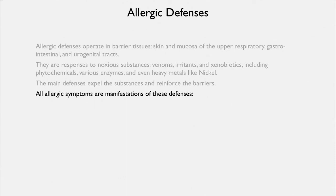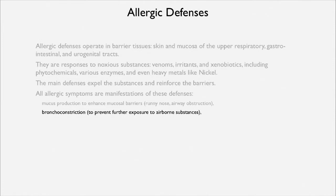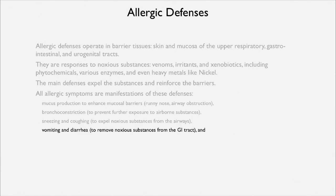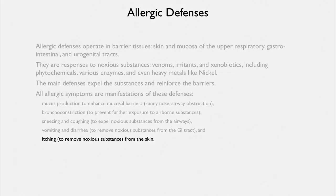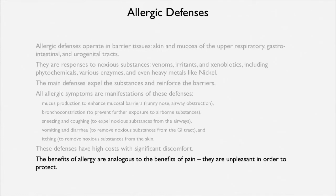The main defenses expel the substances and reinforce the barriers — the idea being get it out and then close the door. Mucus production enhances mucosal barriers, so you get a runny nose. Bronchoconstriction prevents further exposure to airborne substances. Sneezing and coughing gets noxious things out. Vomiting and diarrhea remove noxious substances from the GI tract. Itching can remove noxious substances from the skin. These are all unpleasant symptoms, but the discomfort is part of the defense because it produces an avoidance response — the benefits of allergy are analogous to the benefits of pain.